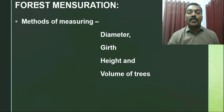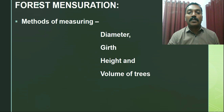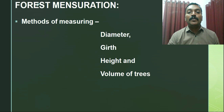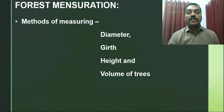Forest mensuration has significant connections with other branches. The most important branch that directly connects with forest mensuration is forest management. One of the important objectives of forest management is yield — and at present, yield means sustainable yield. To talk about yield or sustainable yield, it is important to know forest mensuration, because yield can be obtained using parameters like diameter, girth, and height. Understanding the fundamentals of forest mensuration is the basis of forest management and helps in achieving its various objectives.